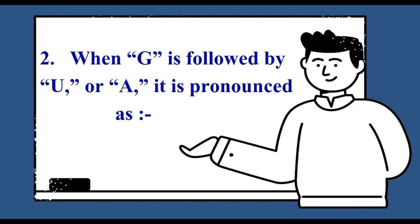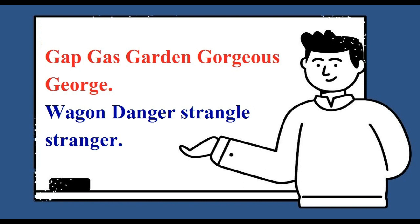When G is followed by U or A, it is pronounced as G. That is: gum, gun, gap, gas, garden, gorgeous, George, wagon, danger, strange, stranger.